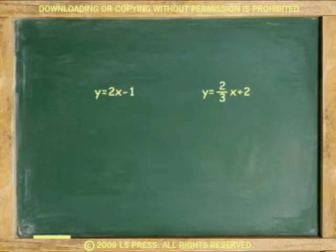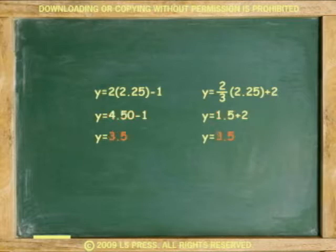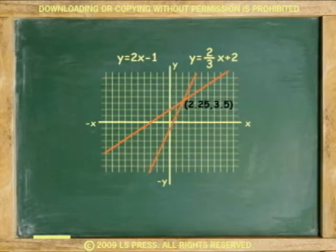Now, to find the y value of the equation, go back to either of the two original equations. Substitute the value of x and get the value for y. Multiply the parenthesis. Subtract. The exact point where the lines cross is 2.25, 3.5.